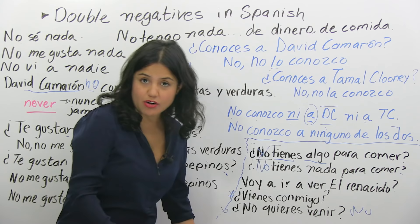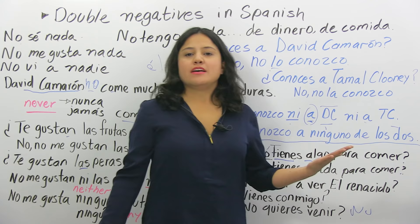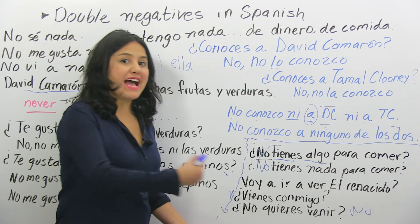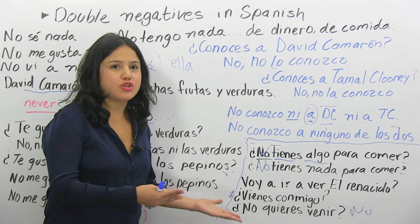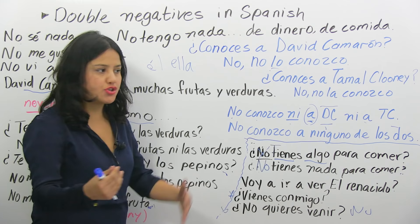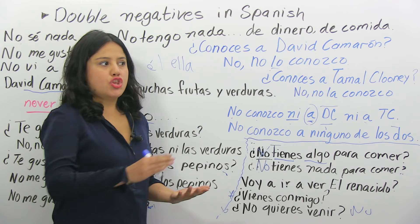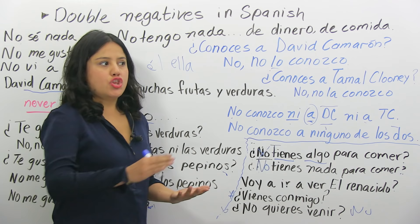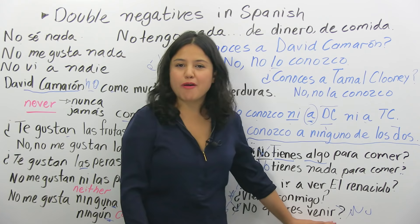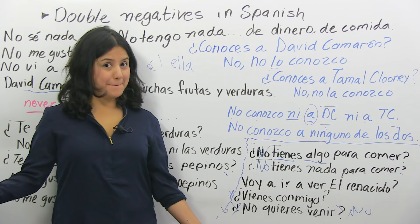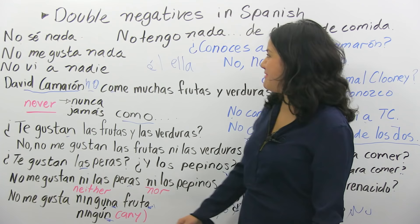Another way to say it is: ¿Vienes conmigo? or ¿Quieres venir? You can also say ¿No quieres venir? but people often find this way of negative asking implies you expect a 'no' for an answer. Maybe we can say instead: ¿Vienes? ¿Te animas? Vamos.